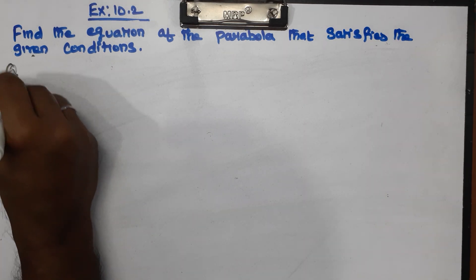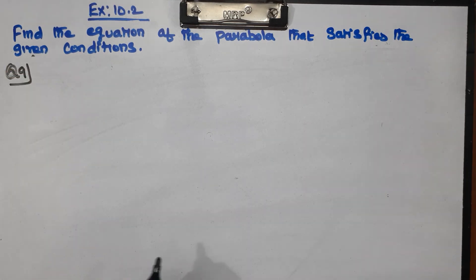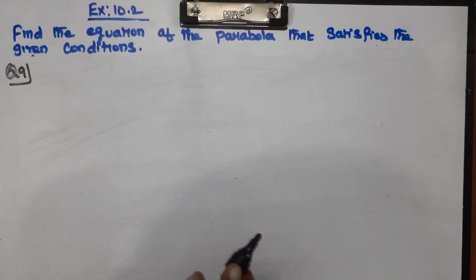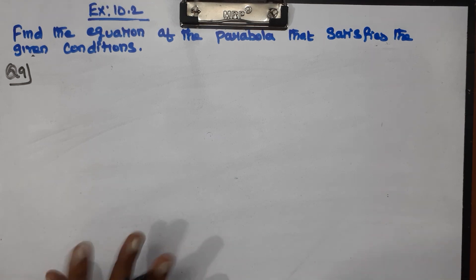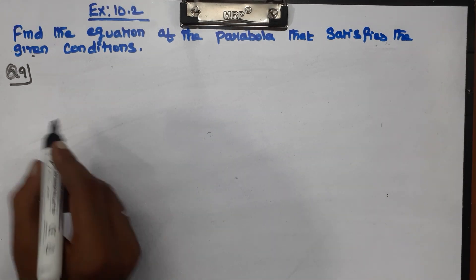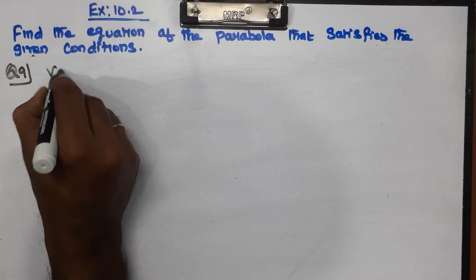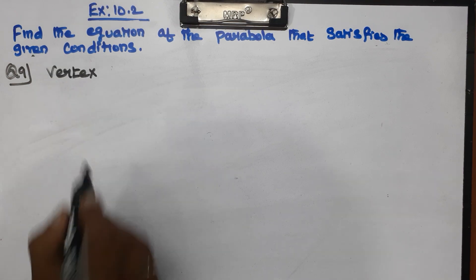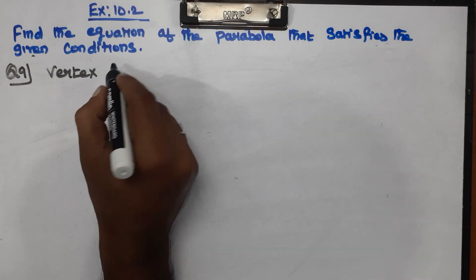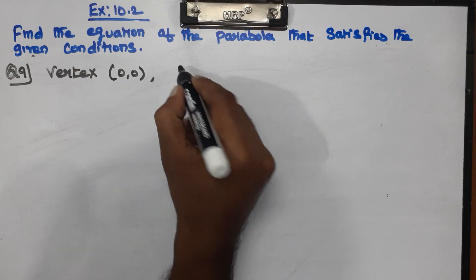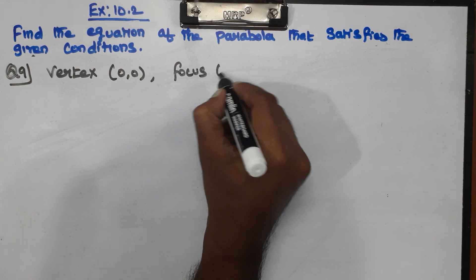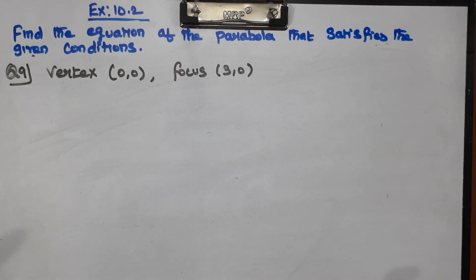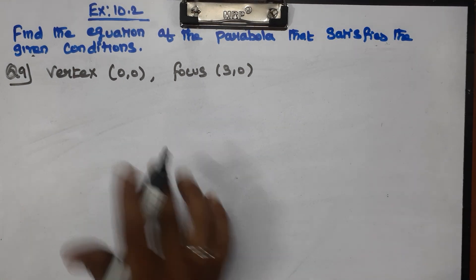Question number 9. In the new NCERT book this is chapter 10, question number 9. Given: vertex and focus (3, 0). Let's take a diagram.